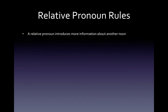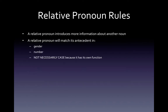So a couple rules. First of all, the function of a relative pronoun is to introduce more information about another noun, specifically a noun that is not inside of the relative clause. The antecedent — the antecedent being the other noun that it's referring to, that we're giving more information about — it will match that noun in both gender and number, not necessarily case.